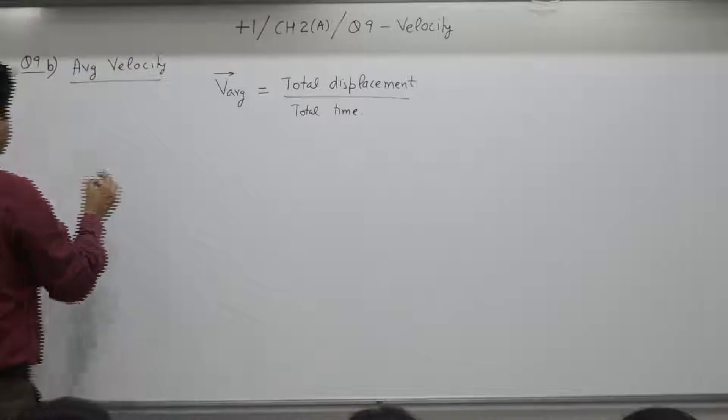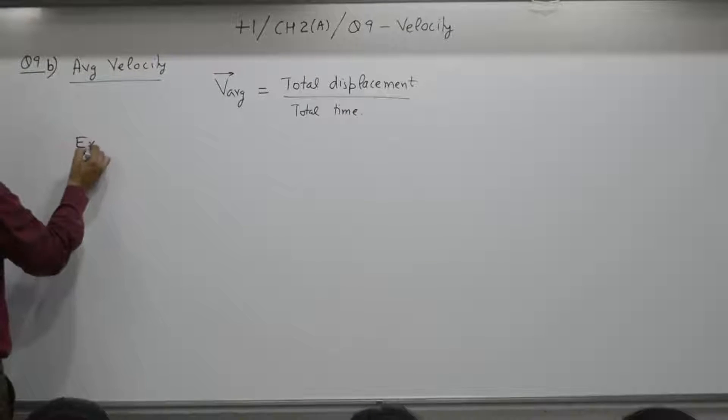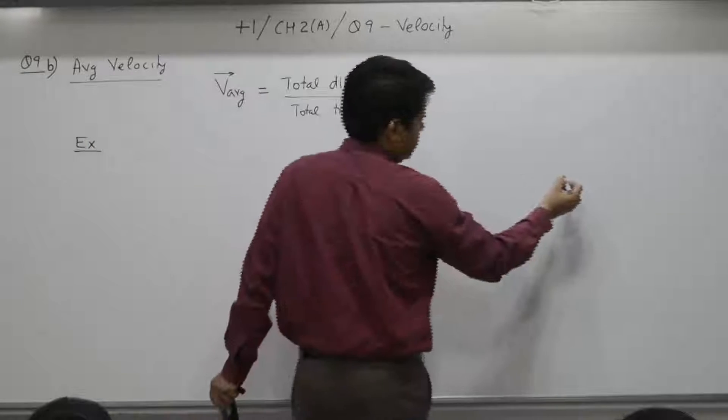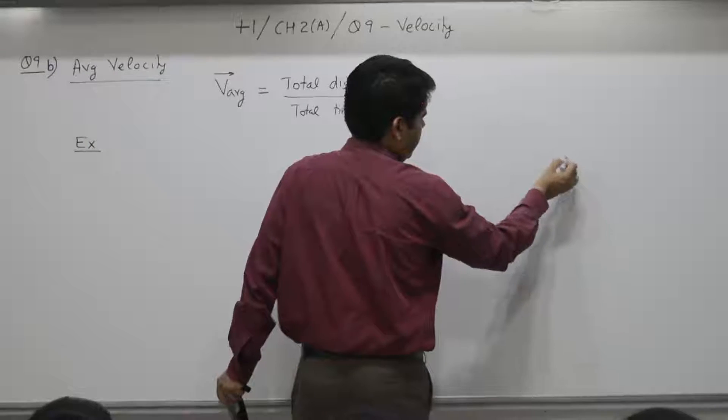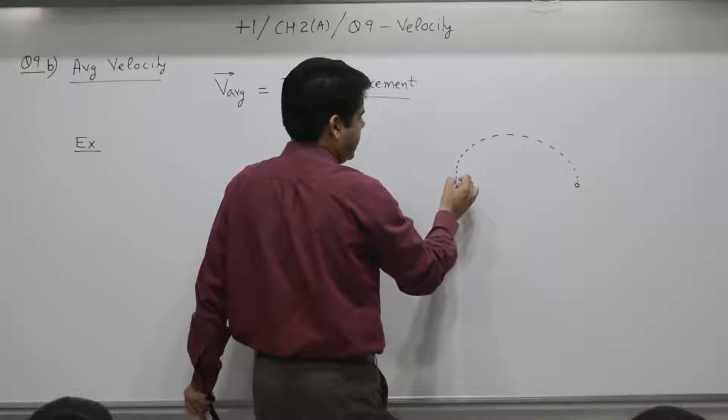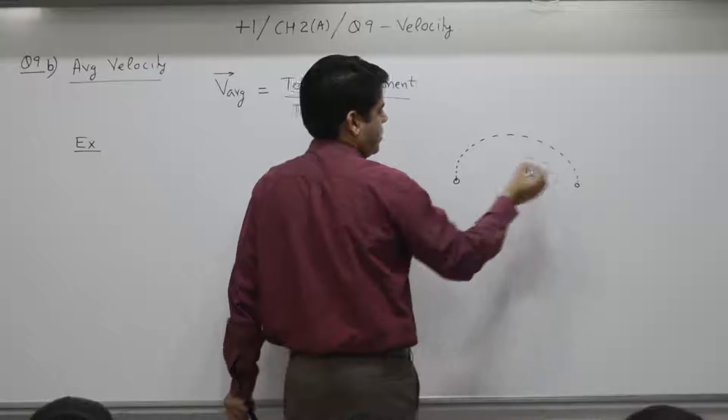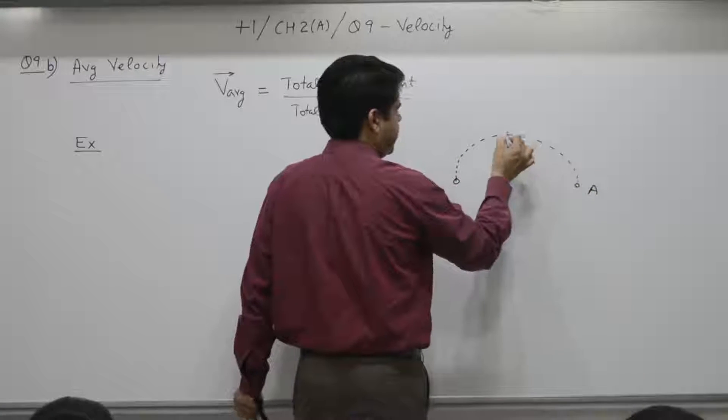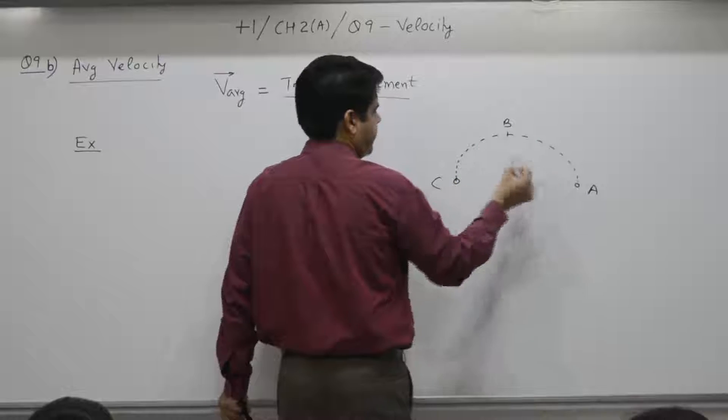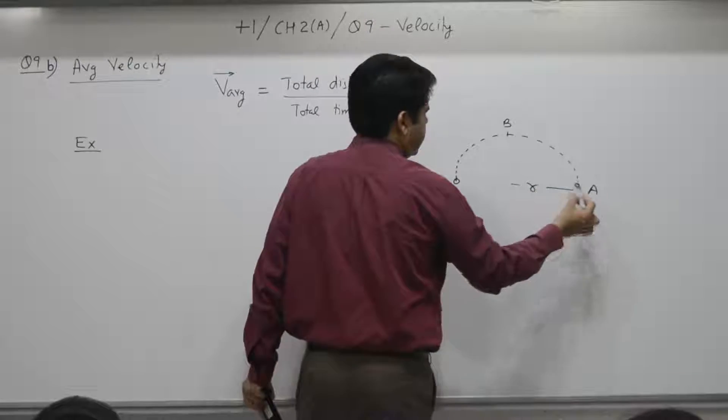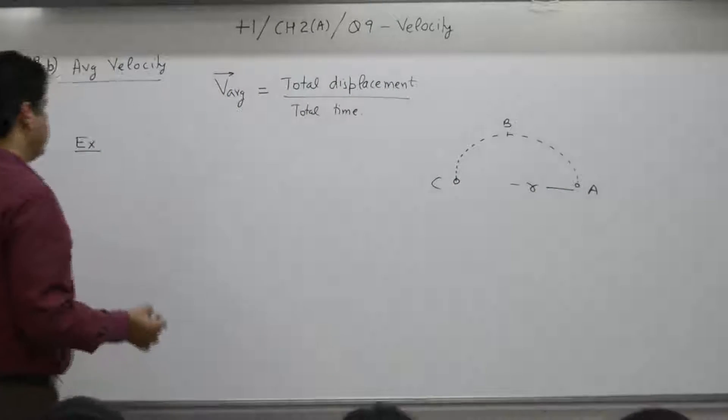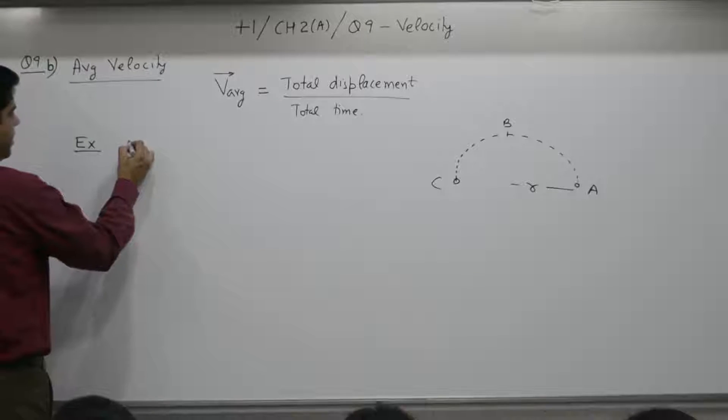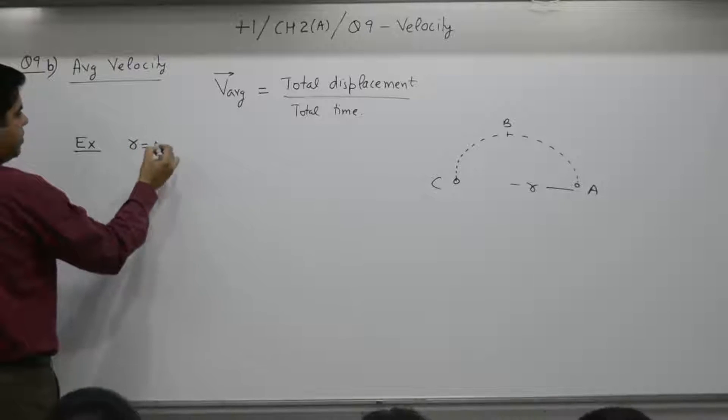Example. A particle moves from A to another diametrically opposite position. This is A, B, C. Radius is R. Given. How much time it takes? What is the radius? Equal to how much?